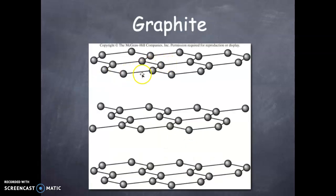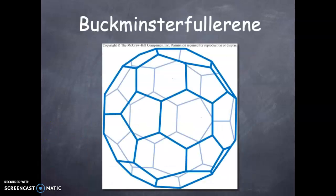This is also carbon, but the layers make graphene, graphite, a fairly weak material. Buckminsterfullerene is another isotrope of carbon.